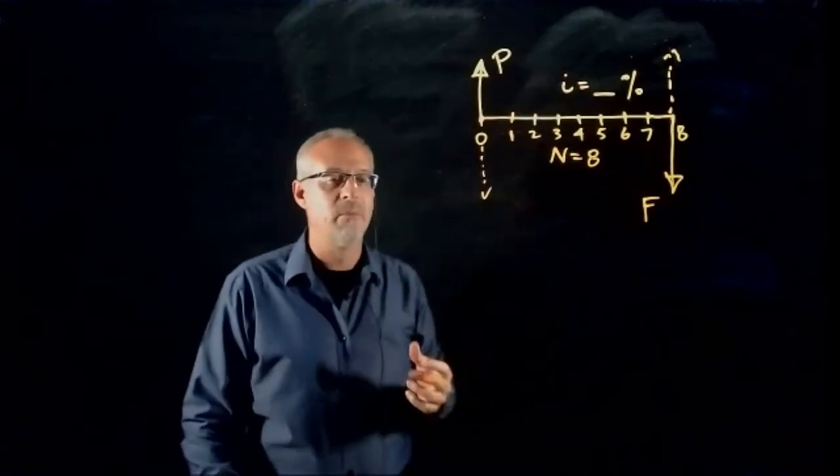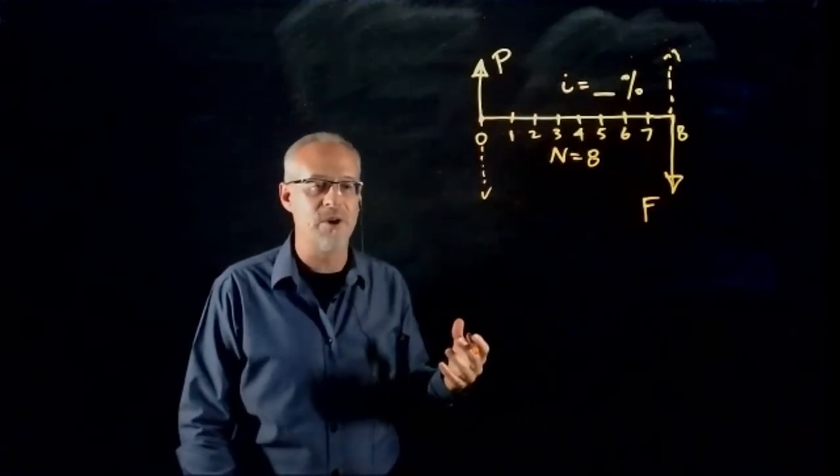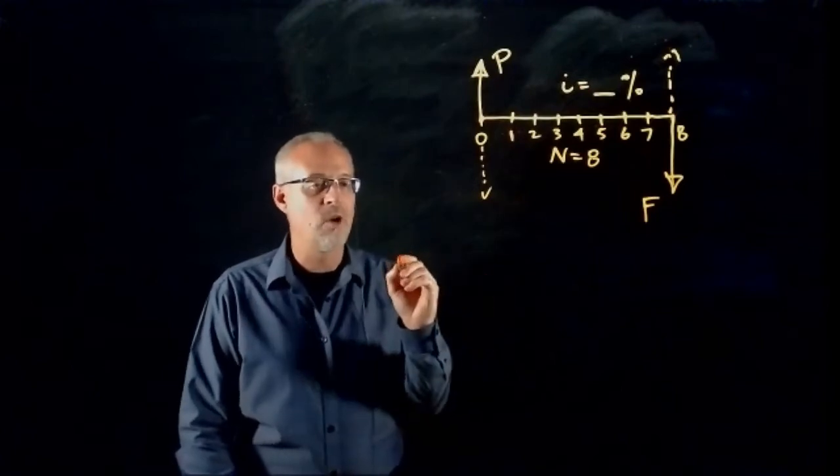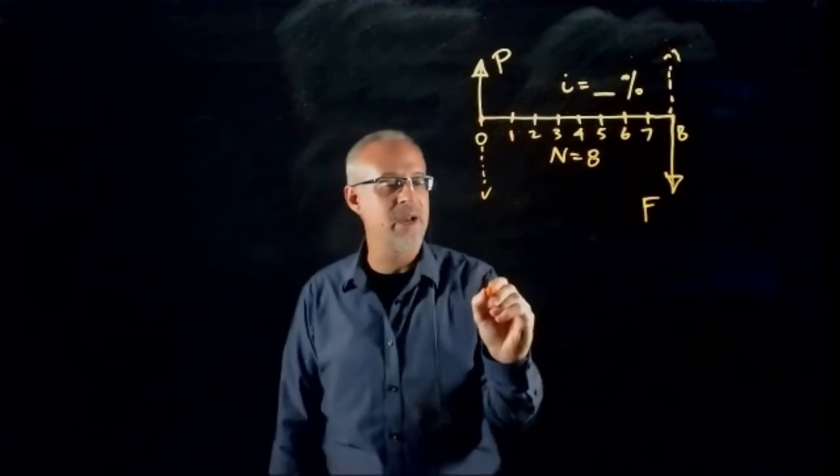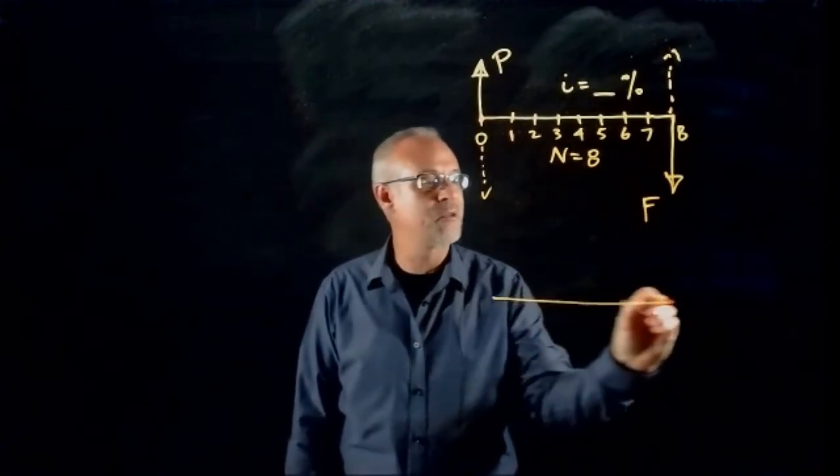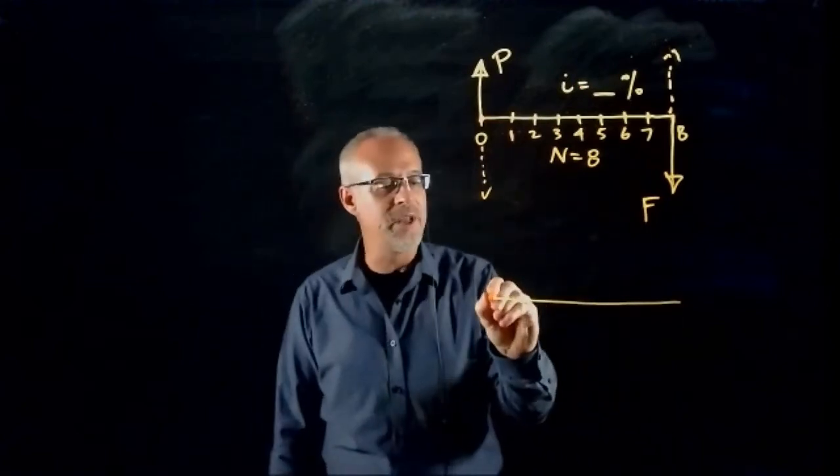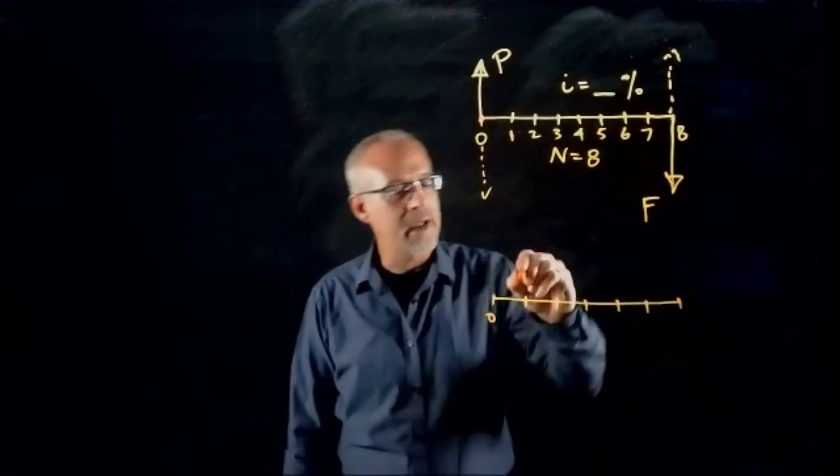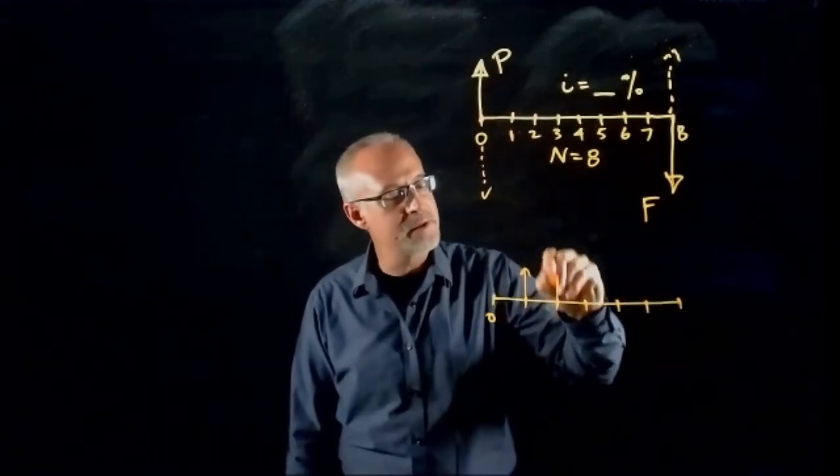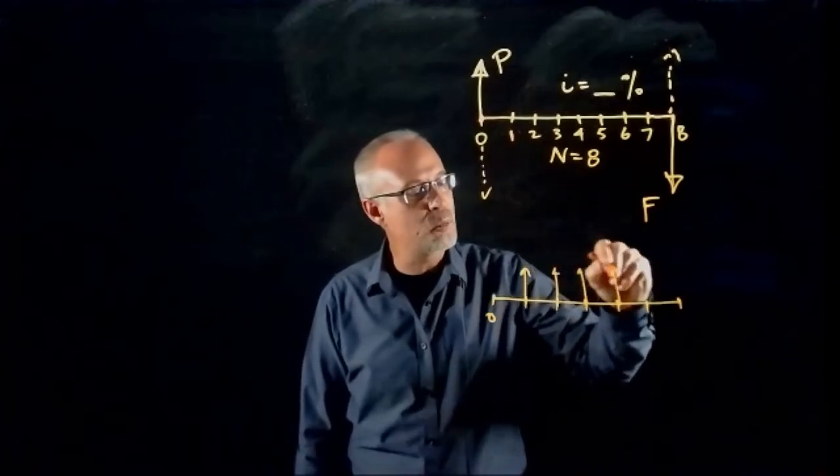And you kind of say, okay Mike, this is pretty easy stuff. Why are you going on? Because what we'll see in this chapter is that there's other patterns that we have to identify. There's one for something we call an annuity. And an annuity pattern has equal payments that occur each period.